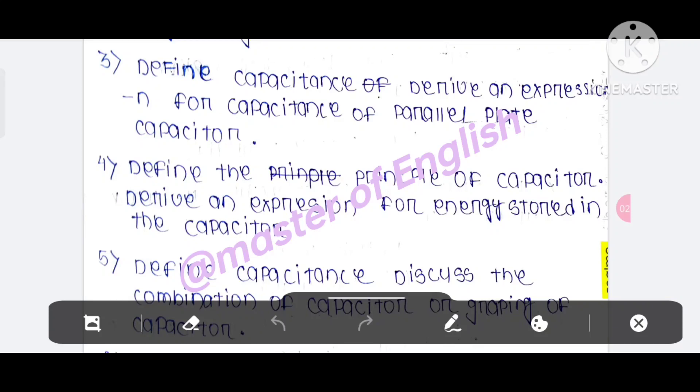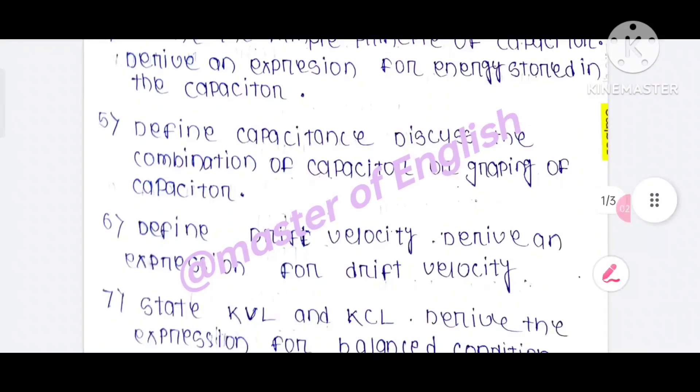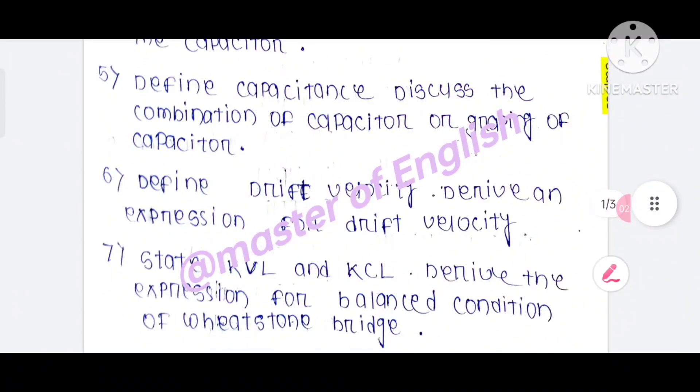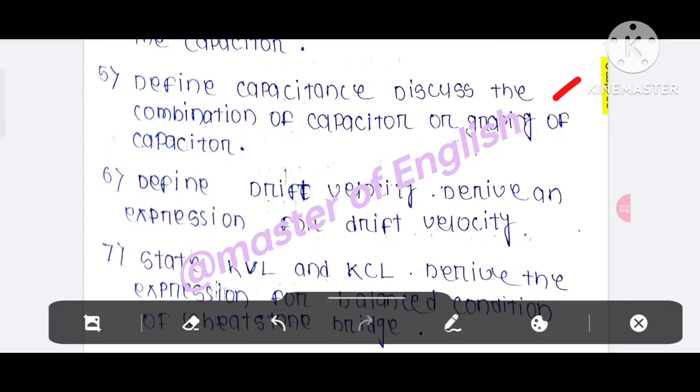Question number 5 and 6. Question number 5: define capacitance, discuss the combination of capacitor or graphing of capacitor. Number 6: define drift velocity, derive an expression for drift velocity.